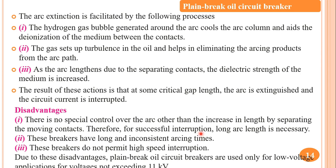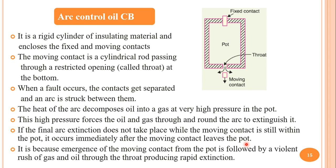Plain break oil circuit breakers do not permit high-speed interruption. Because of these disadvantages, they are used only for applications below 11 kV. Instead of plain break oil circuit breakers, arc control oil circuit breakers are used for higher performance requirements.